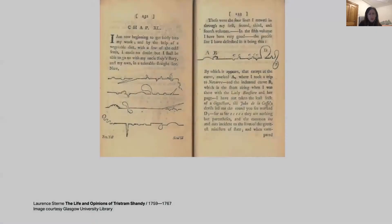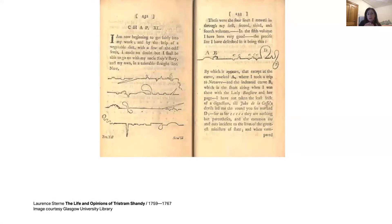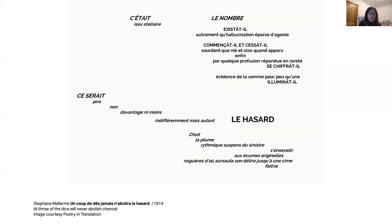I wanted to include some historical examples of experimental typography and the book format. An early example of visual experimentation that disrupted notions of transparency in the language system and alluded to the materiality of language includes Laurence Sterne's novel 'The Life and Opinions of Tristram Shandy' in the mid 18th century, featuring the interweaving of verbal and visual readings.